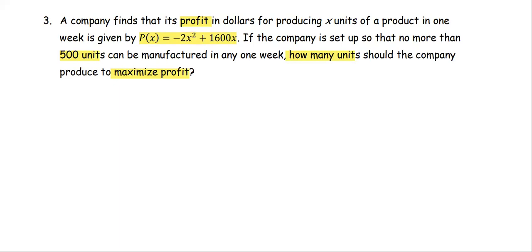The P is the profit function, P(x) = -2x² + 1600x. This is a continuous function. The problem states no more than 500 units can be manufactured, which represents the interval of x values.